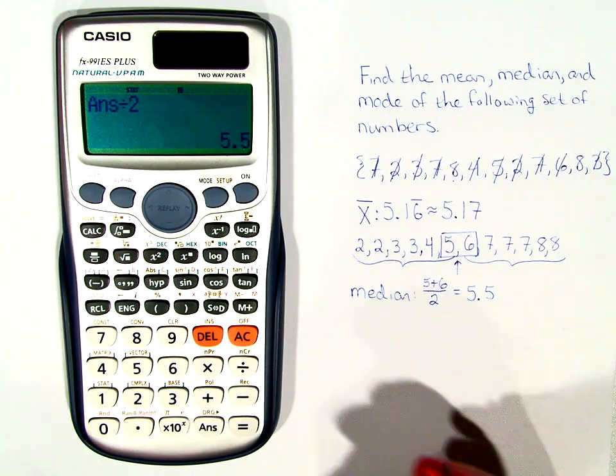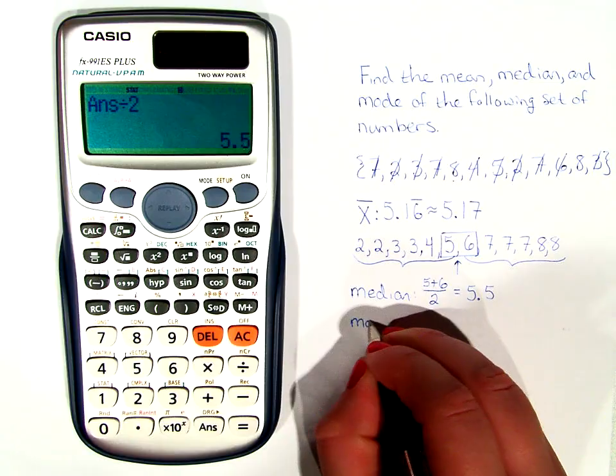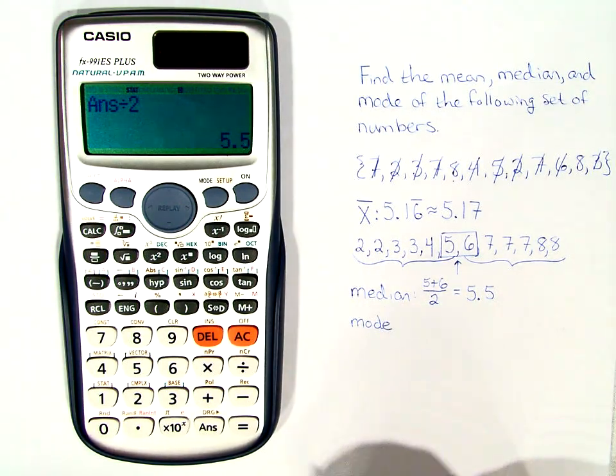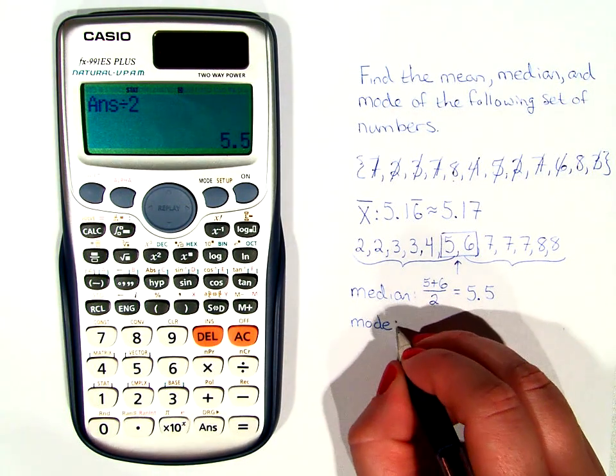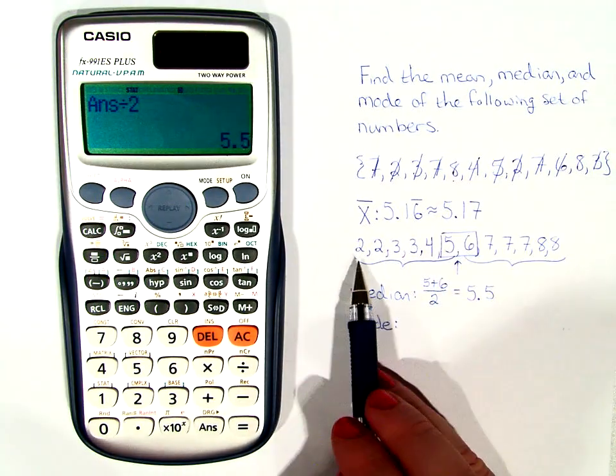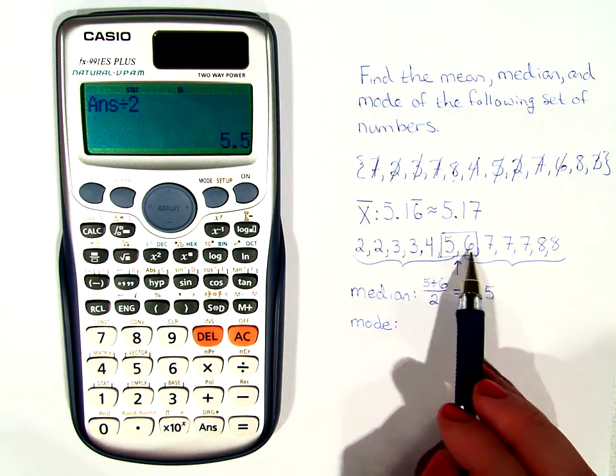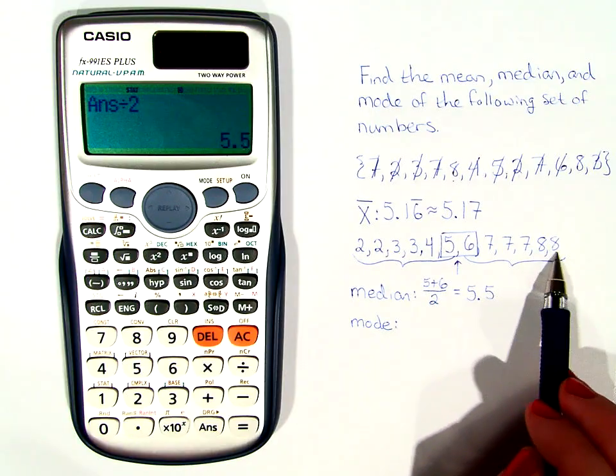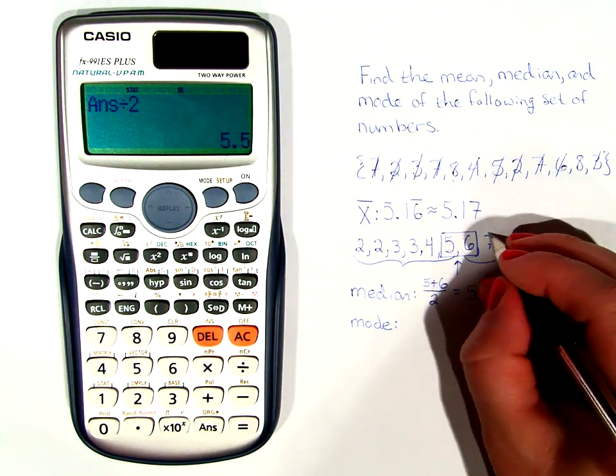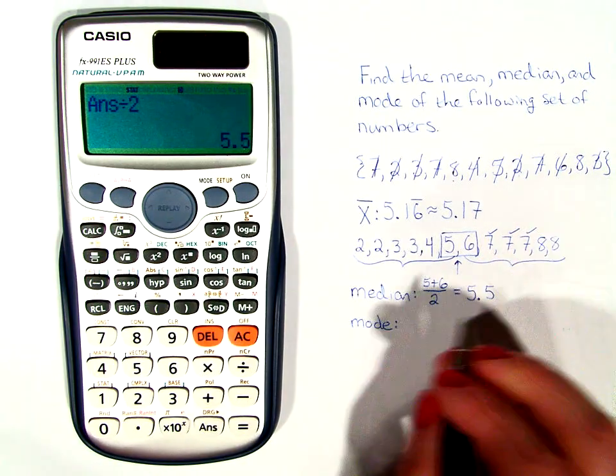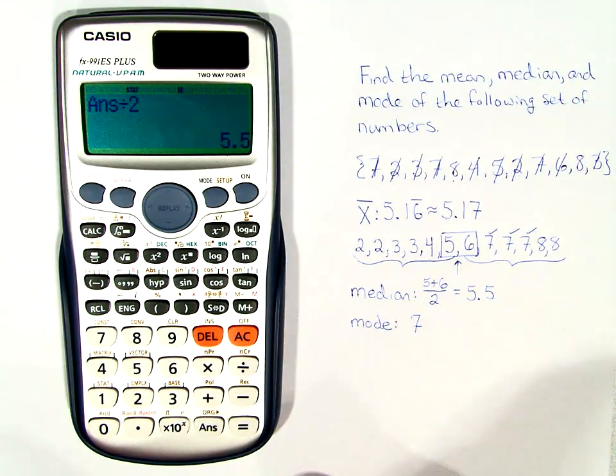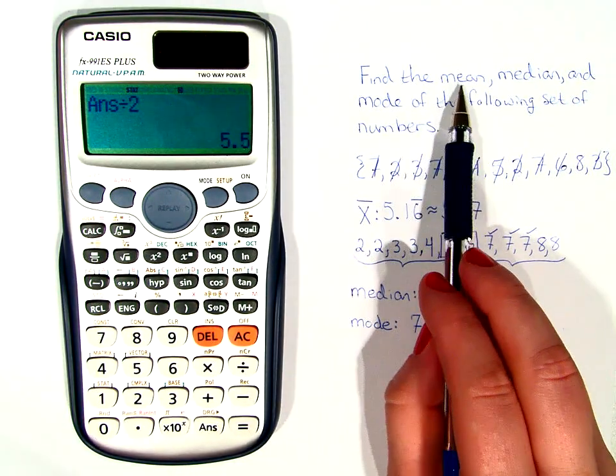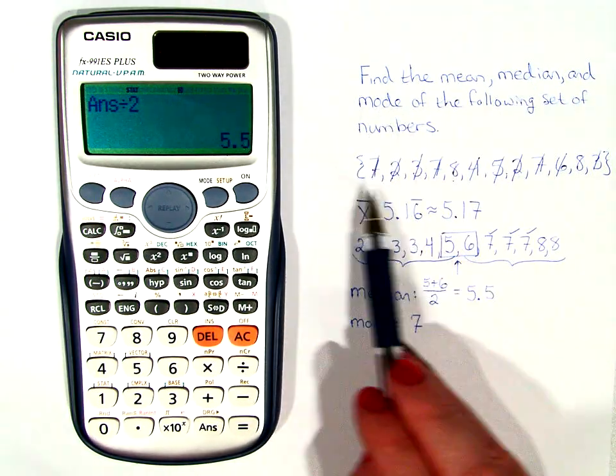The last thing we're looking for is the mode, or the number that is repeated the most frequently. Which number is repeated more than any other number? The 7's. They are repeated 3 times. So the mode is 7. And that's how you find the mean, the median, and the mode using your calculator.